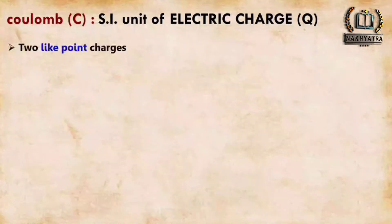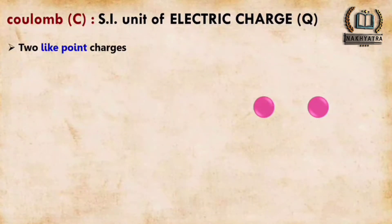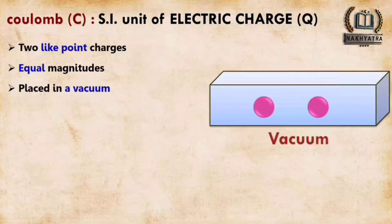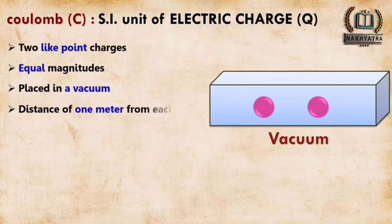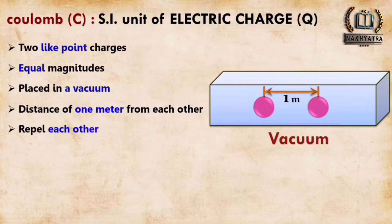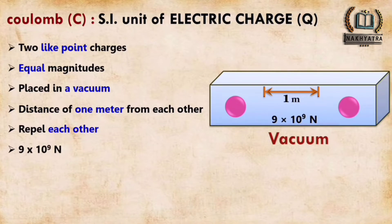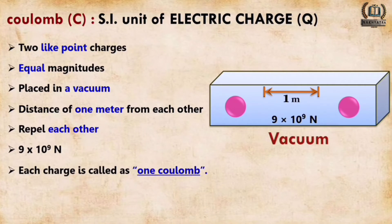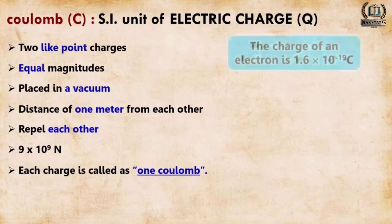There are two like point charges — meaning two positive or two negative charges of equal magnitude placed in a vacuum, where there is no air or any other gas. These two like point charges are placed at a distance of one meter from each other and they repel each other. For two 1-Coulomb charges separated by one meter, the magnitude of the force is F = 9 × 10⁹ Newton. Each charge is called one Coulomb.